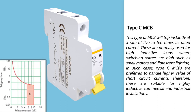Type C miniature circuit breaker will trip instantly at a rate of five to ten times its rated current. These are normally used for high inductive loads where switching surges are high, such as small motors and fluorescent lighting. In such cases, Type C is preferred to handle higher values of short circuit currents, and is therefore suitable for highly inductive commercial and industrial installations.